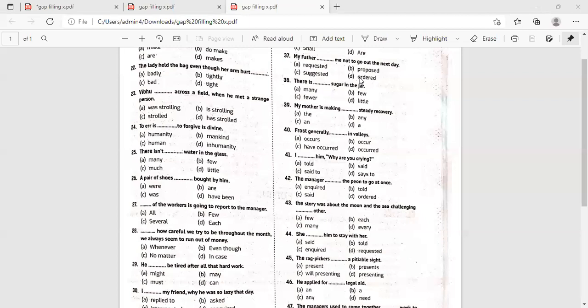There is dash sugar in the jar. This is sometimes very confusing. Find out if sugar is countable, uncountable. What are the determiners we use for countable and uncountable? Many and a few, fewer as a comparison. There is little sugar in the jar. My mother is making dash steady recovery. The, an, any, no, a. My mother is making a steady recovery.